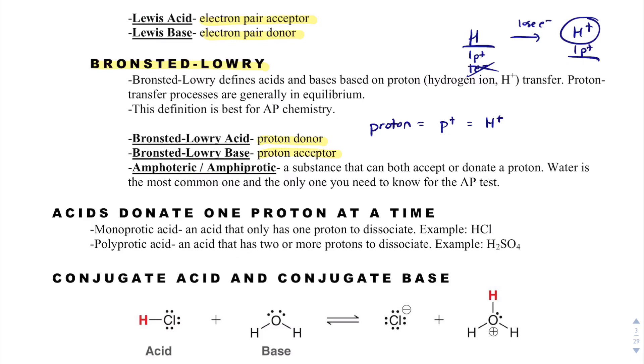It is possible for a substance to be called amphoteric or amphiprotic, and that's a substance that can behave as both an acid or a base. So it can either accept or donate a proton. And water is a really great example of probably the most common example of an amphoteric substance.